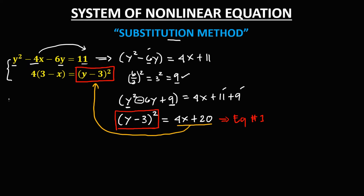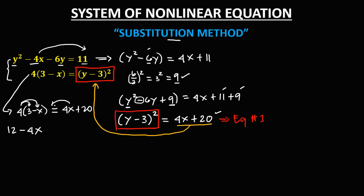So from equation number 2, this is now the new equation: we have 4 times 3 minus x equals the quantity y minus 3 to the power 2, which is equal to 4x plus 20. Then simplify: 4 times 3 is 12, and 4 times negative x is negative 4x. Then transpose this positive 4x, that becomes negative 4x, negative 4x, then equals 0.